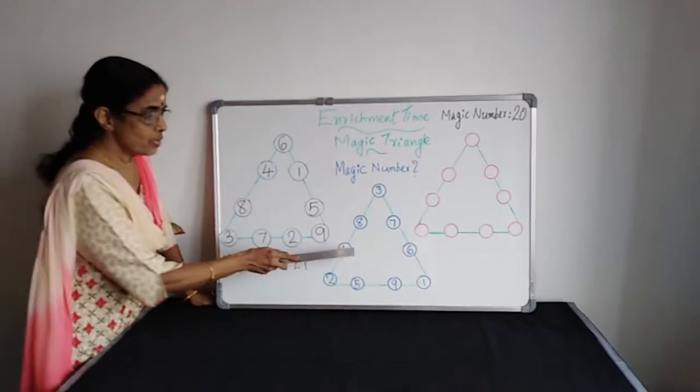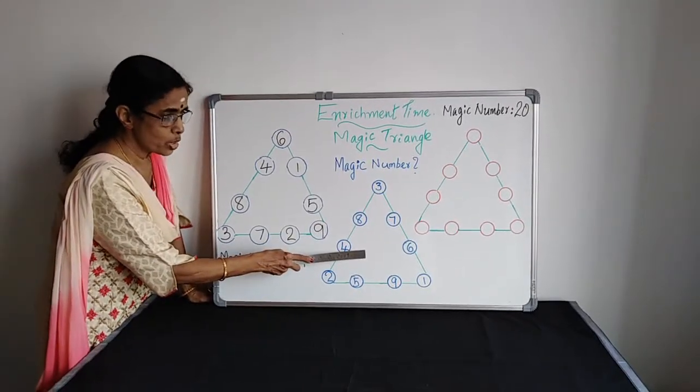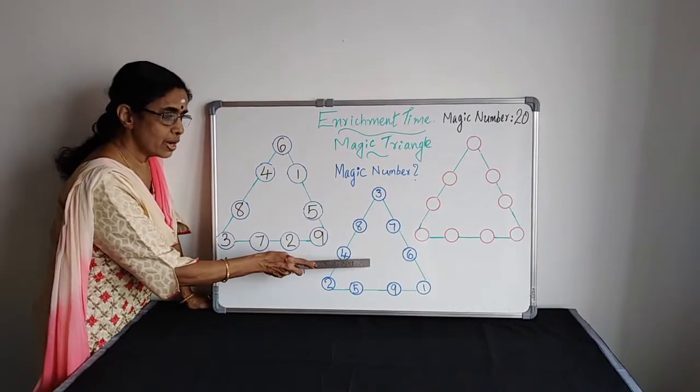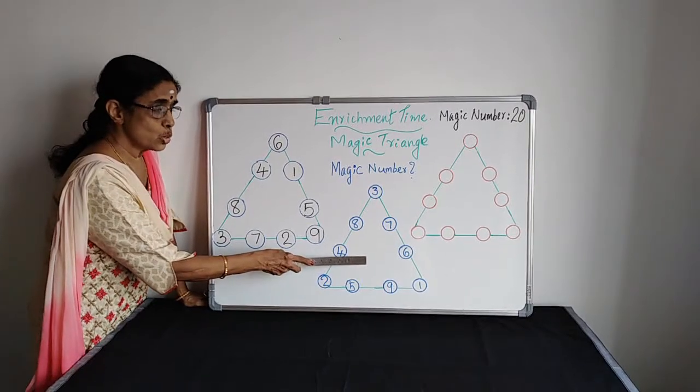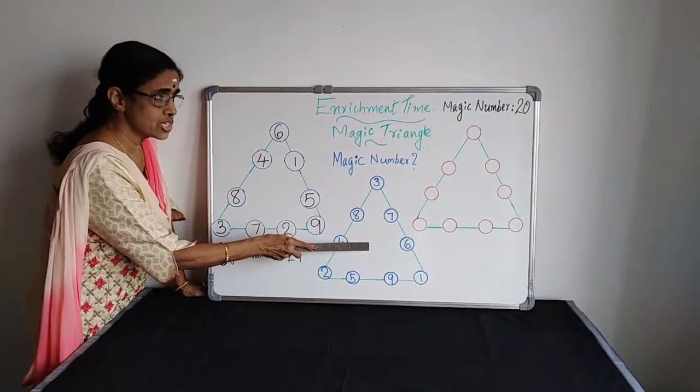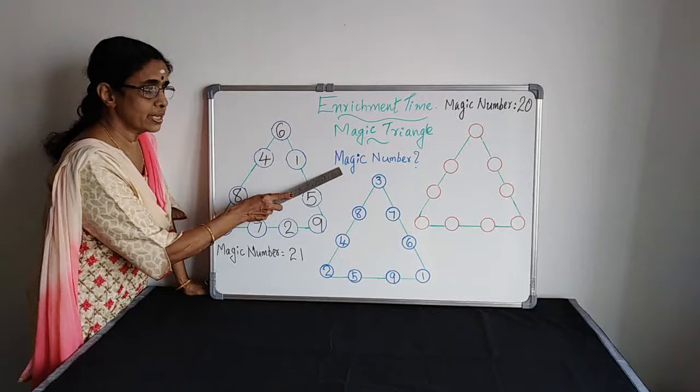Here also, we have used the same numbers 1 to 9 and we have arranged it differently. So you have to calculate. It is a Magic Triangle. You have to calculate the Magic Number.